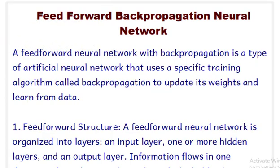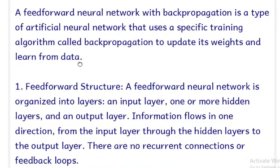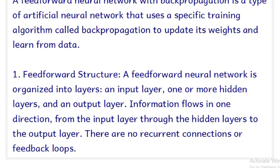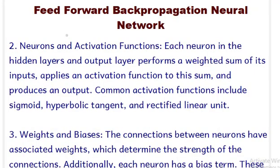Let us see some theory about this. A feed forward neural network with backpropagation is a type of neural network that uses a training algorithm called backpropagation. We update the weights as this particular neural network learns. The algorithm updates the weights until they settle down to a particular value. This neural network has a feed forward structure with three layers: an input layer, one or more hidden layers, and an output layer. Information flows from the input layer to the hidden layer, and from the hidden layer to the output layer.